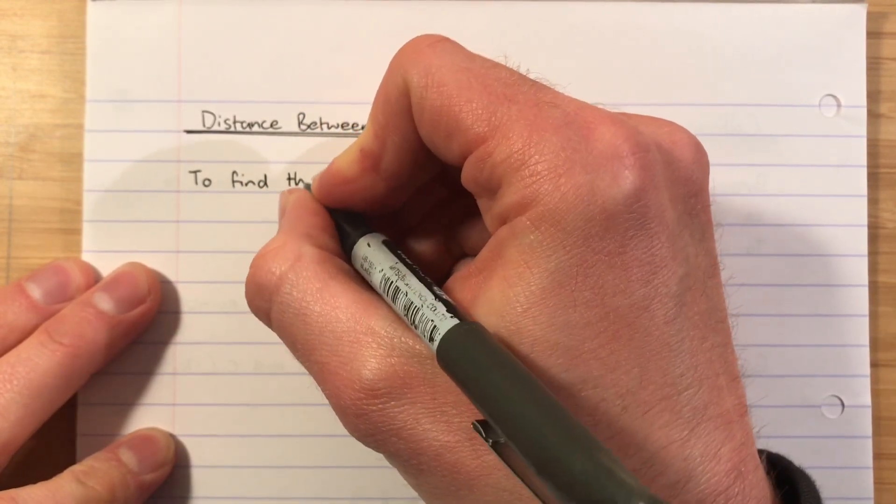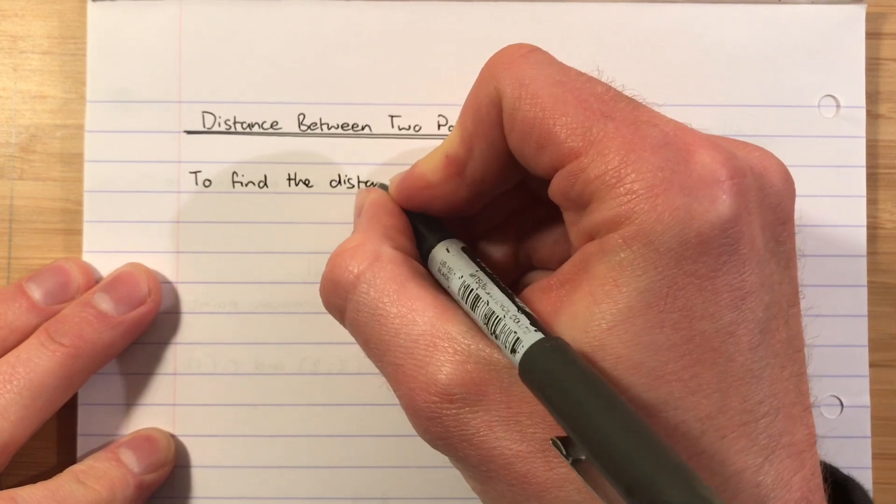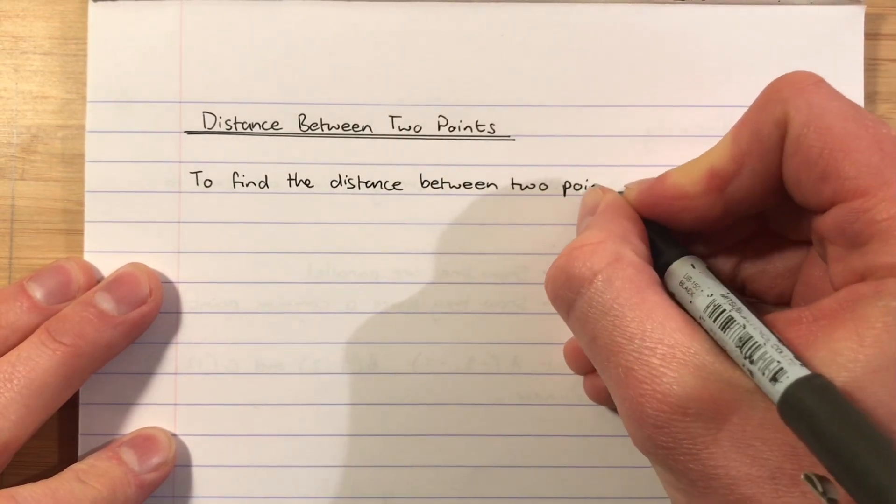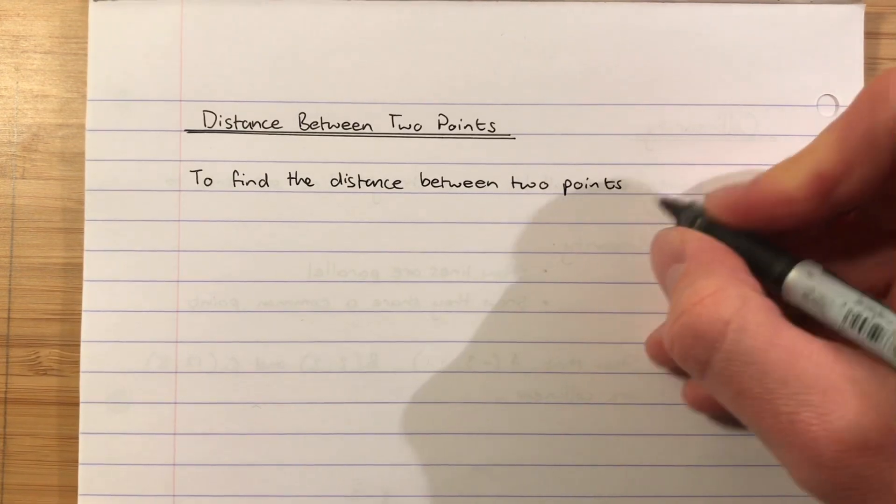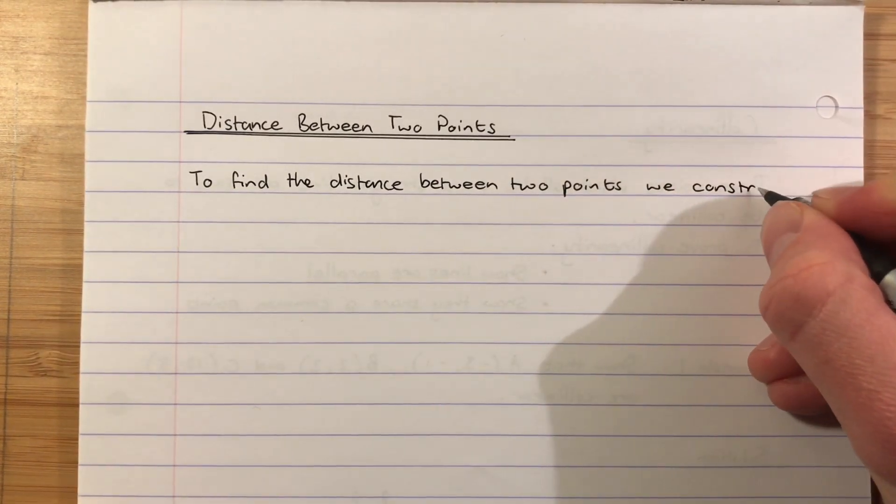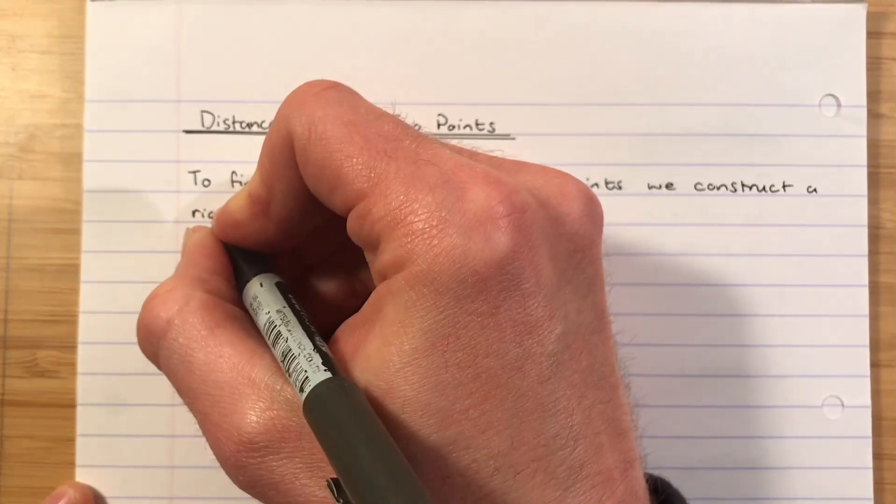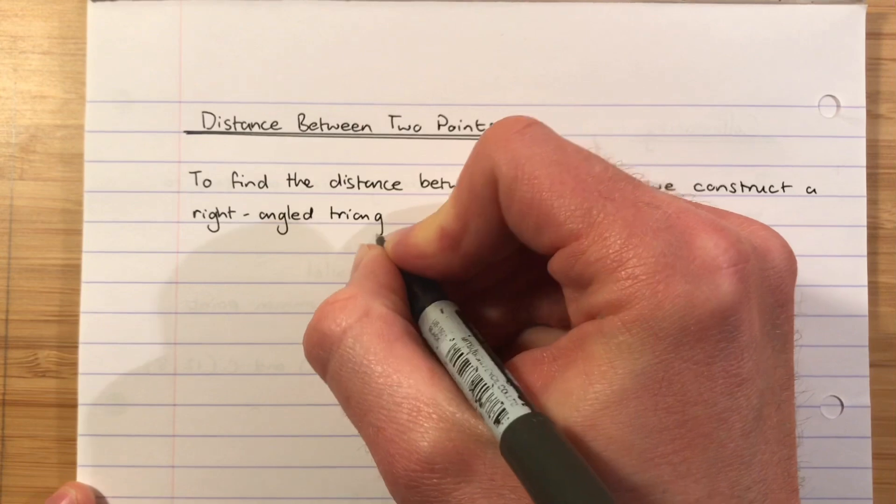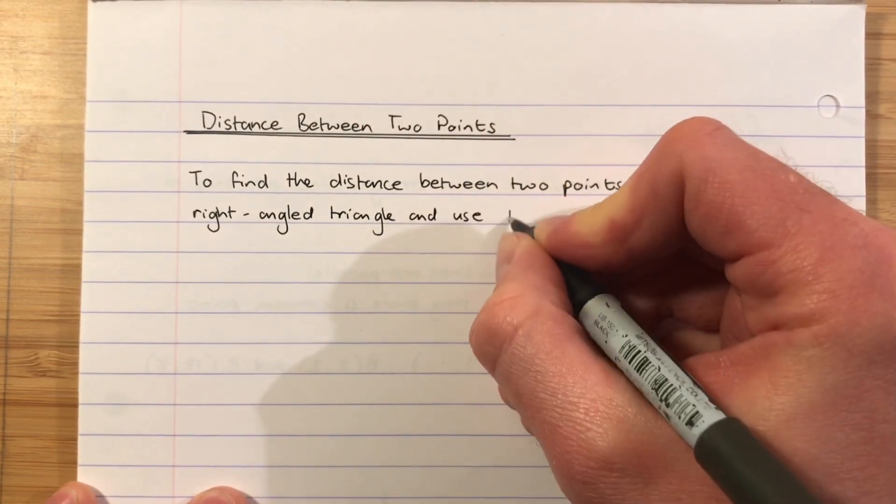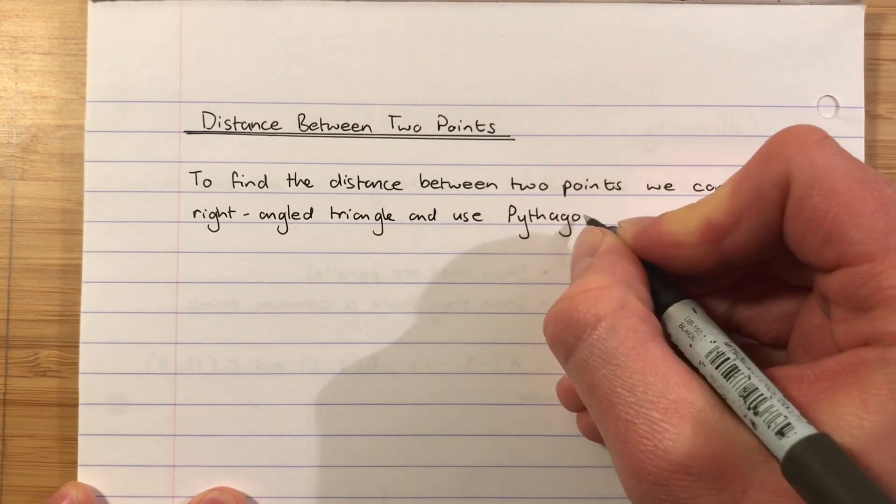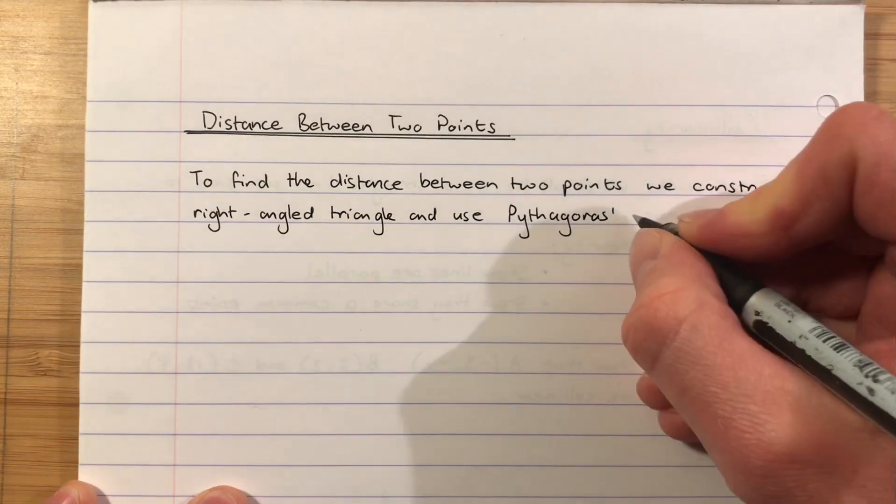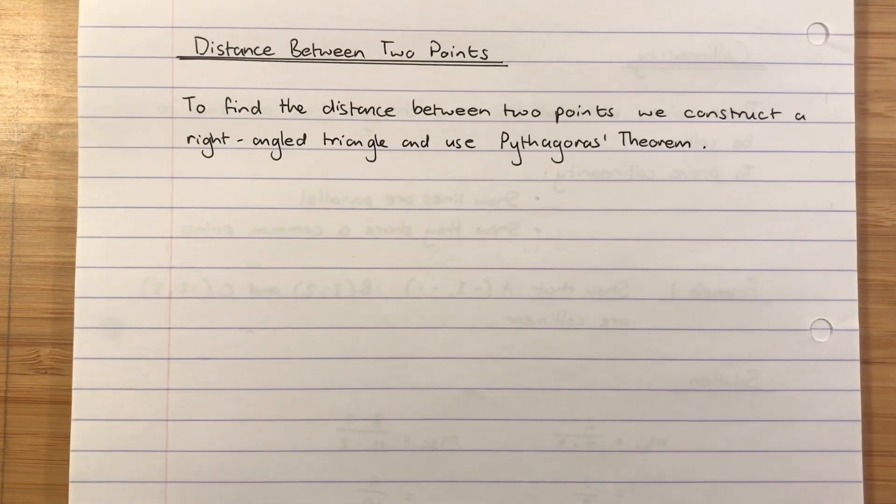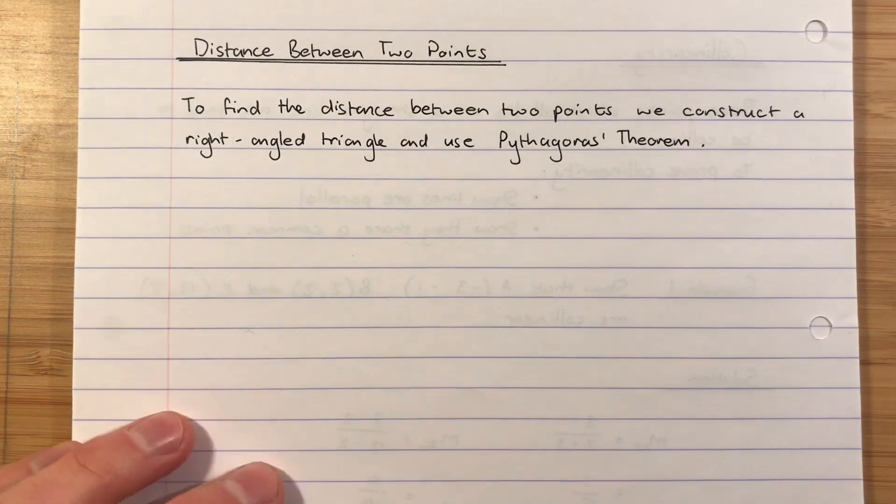To find the distance between two points, we construct a right-angled triangle and use Pythagoras' theorem. He might not have actually come up with it, but he's claimed it. So we're going to build a right-angled triangle and use Pythagoras' theorem.